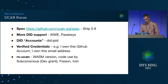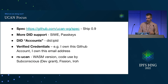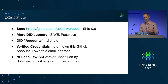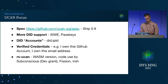Another area is verifiable credentials — things like proving I own this GitHub account, I own this email, and at the station, when a user wants to log in, hooking the UCAN stuff into that.